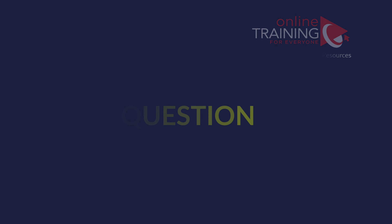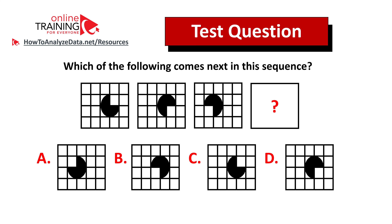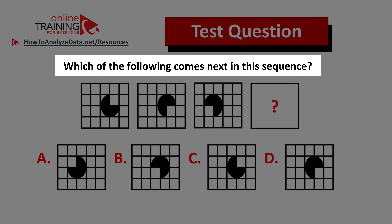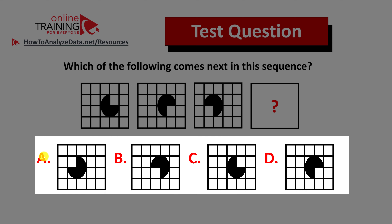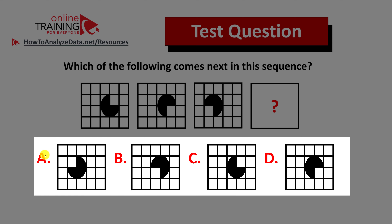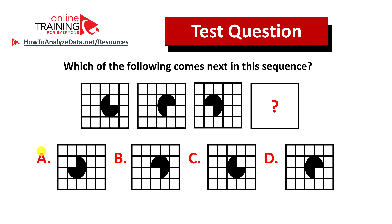Let's look at an interesting question which tests your visualization as well as analytical skills. Which of the following comes next in the sequence? You have a sequence of 4 by 5 rectangles, and each rectangle contains a pie inside. Figure 4 is missing, and there are 4 different choices. Now might be a good time to pause this video to see if you can come up with the solution on your own.